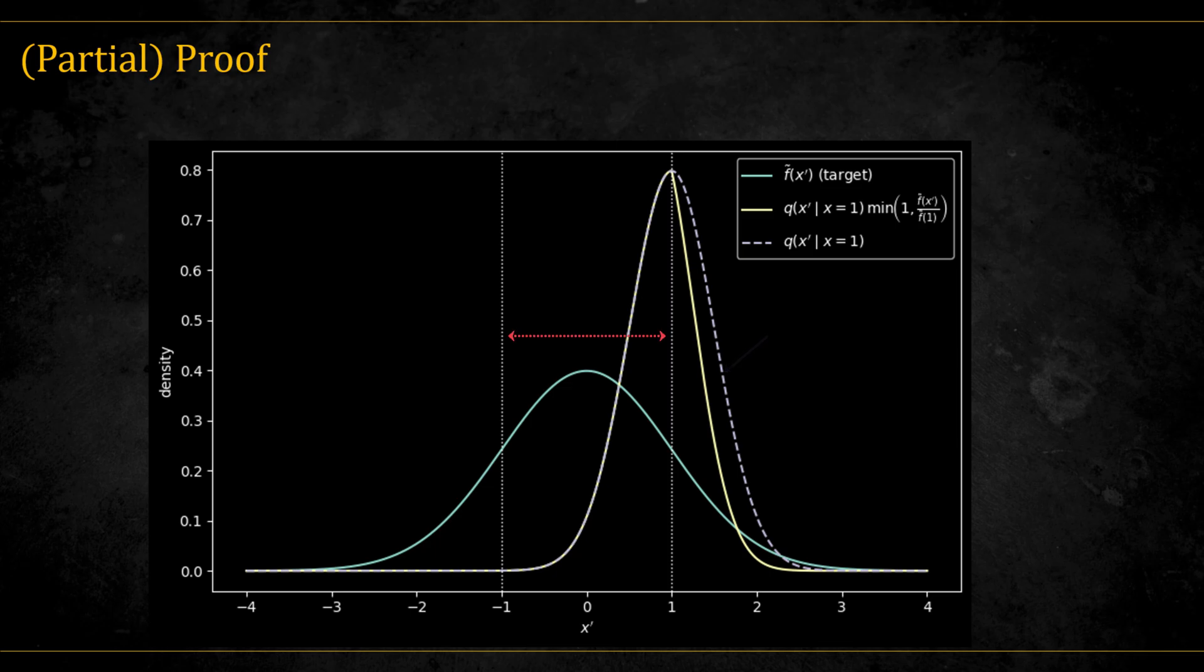Here you can see an example where the target distribution is standard Gaussian, the current point is at x equal 1, and q is also a Gaussian but with a standard deviation of half. You can see that between minus 1 and 1, q and q times the acceptance probability are the same. But outside this range, they start to diverge. This is more noticeable to the right side, of course, where the probability of q is higher. And actually, the integral of q times the acceptance is about 0.82.